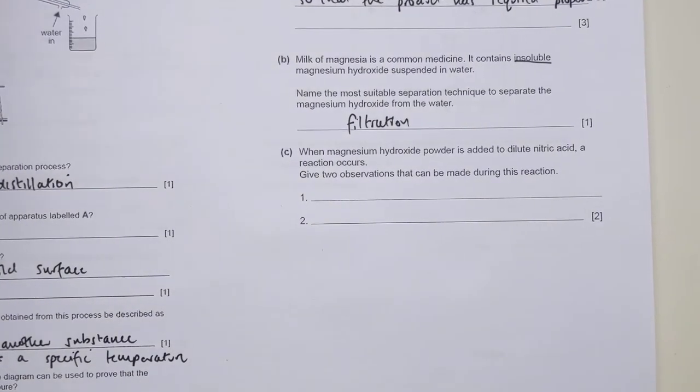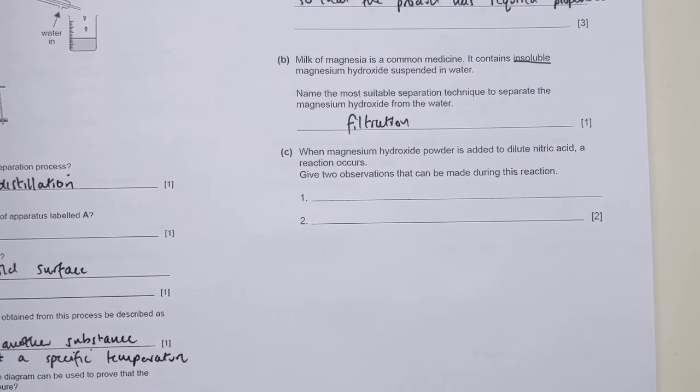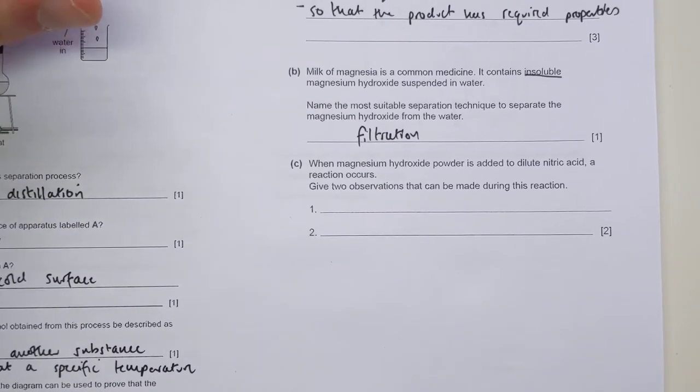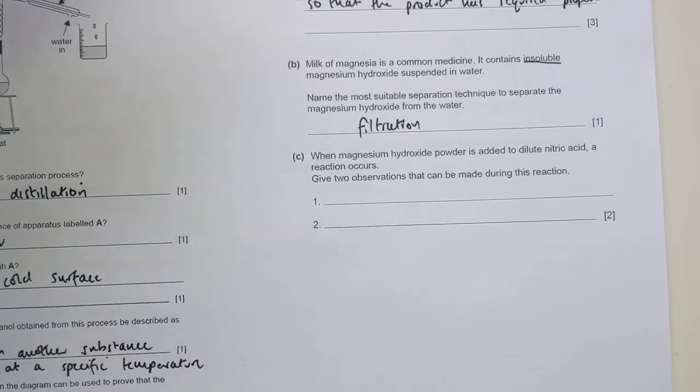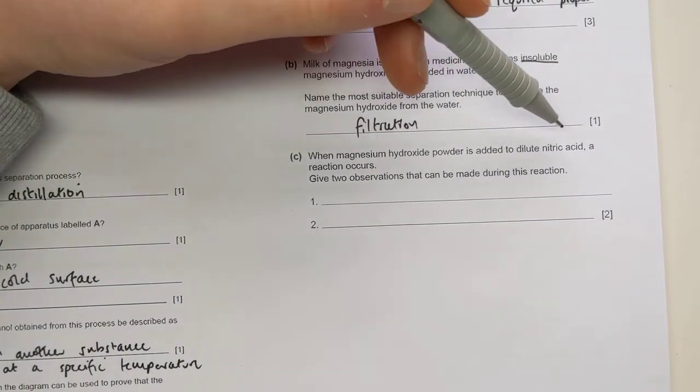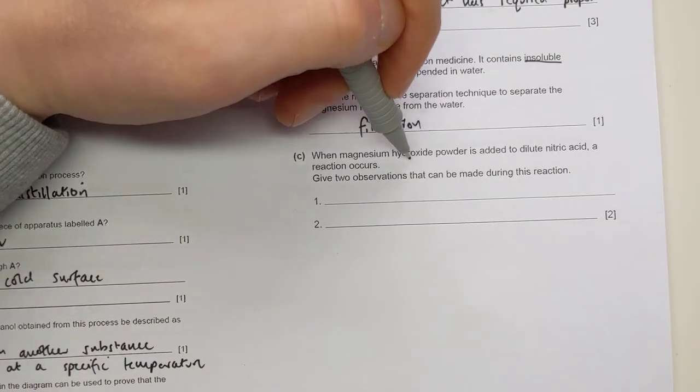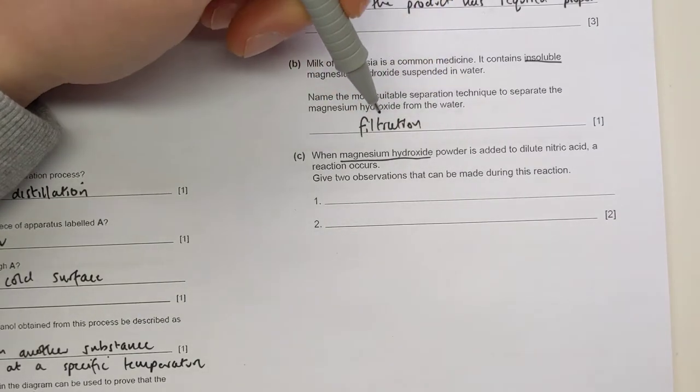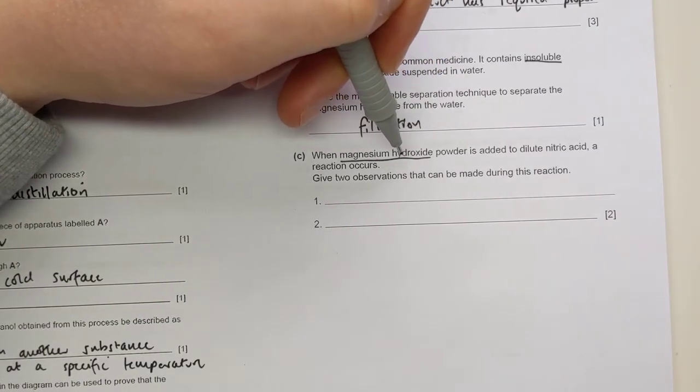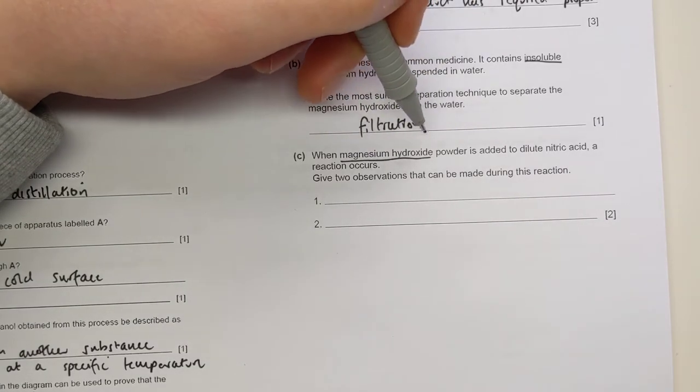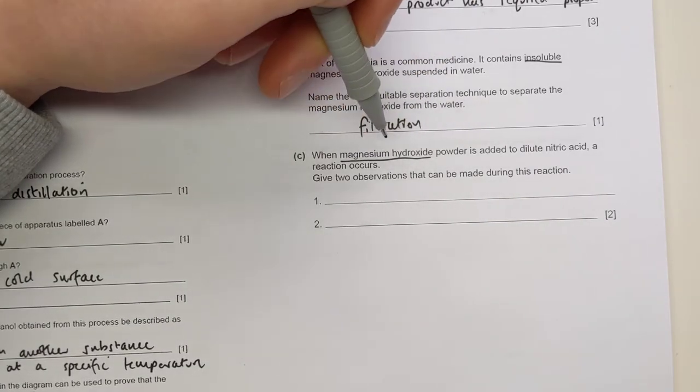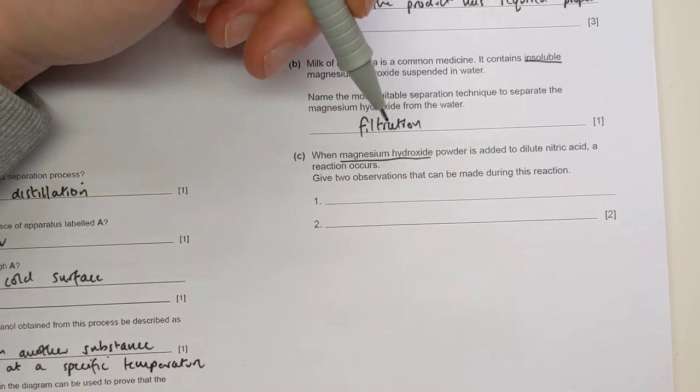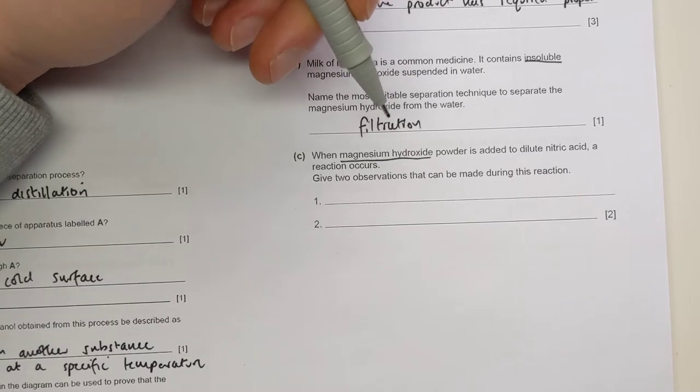Part C. When magnesium hydroxide powder is added to dilute nitric acid, a reaction occurs. Give two observations made during this reaction. So that's going back to your acids topic. Magnesium hydroxide added to dilute nitric acid. Maybe it would be a bit tricky in that we're not quite sure what this is. But if you remember your notes from acids, a metal hydroxide is an example of an alkali or a base in this case because it's not soluble. It's kind of an exception to that hydroxide rule. But if we think about the idea of a base and an acid.